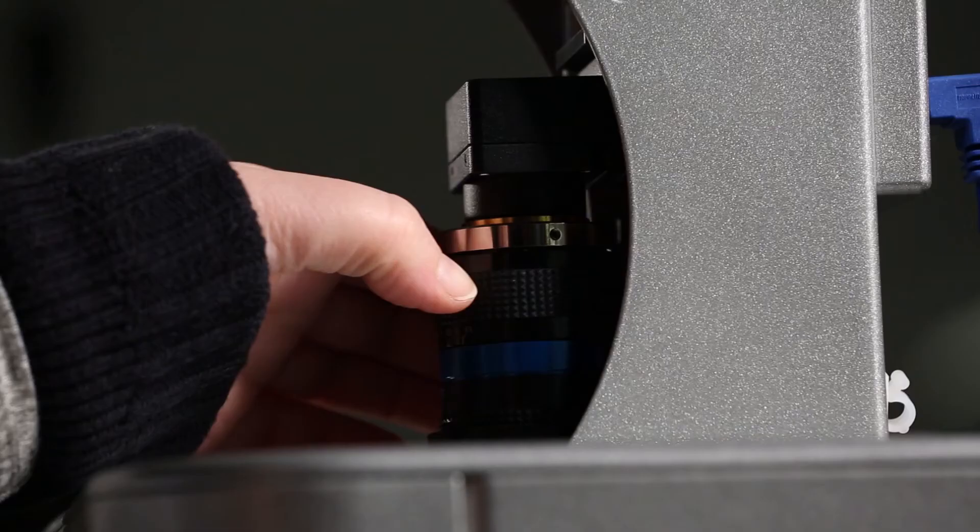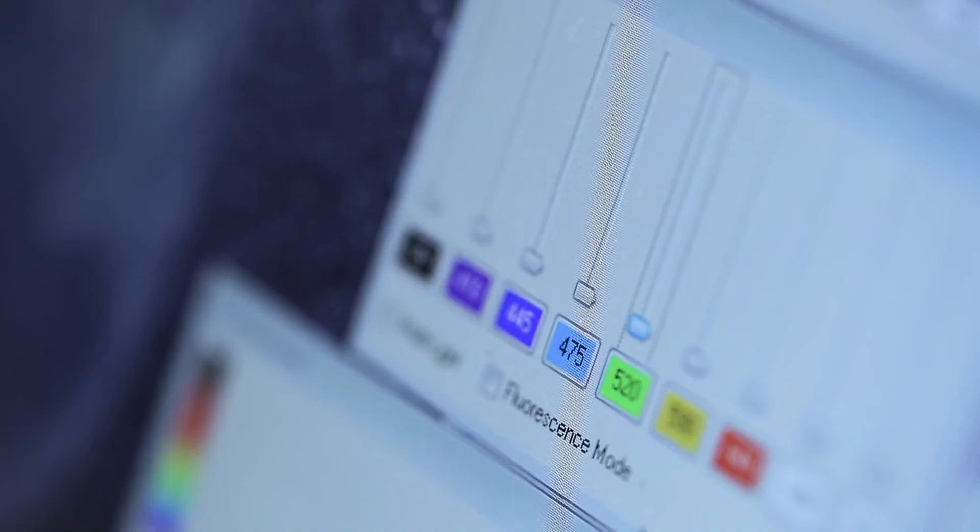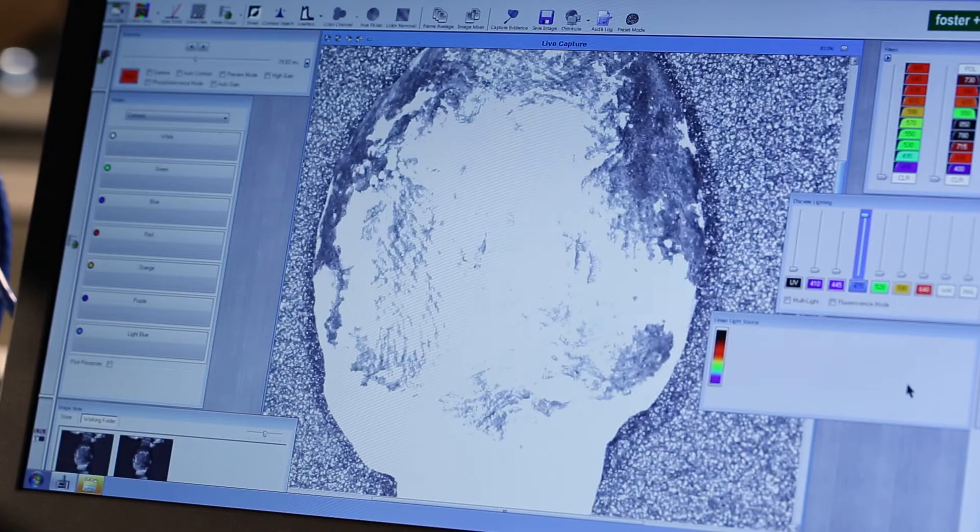So what we're doing is taking a seal where we can see that there is some sort of image on there, some sort of fingerprint or palm print, and we're making it more visible.